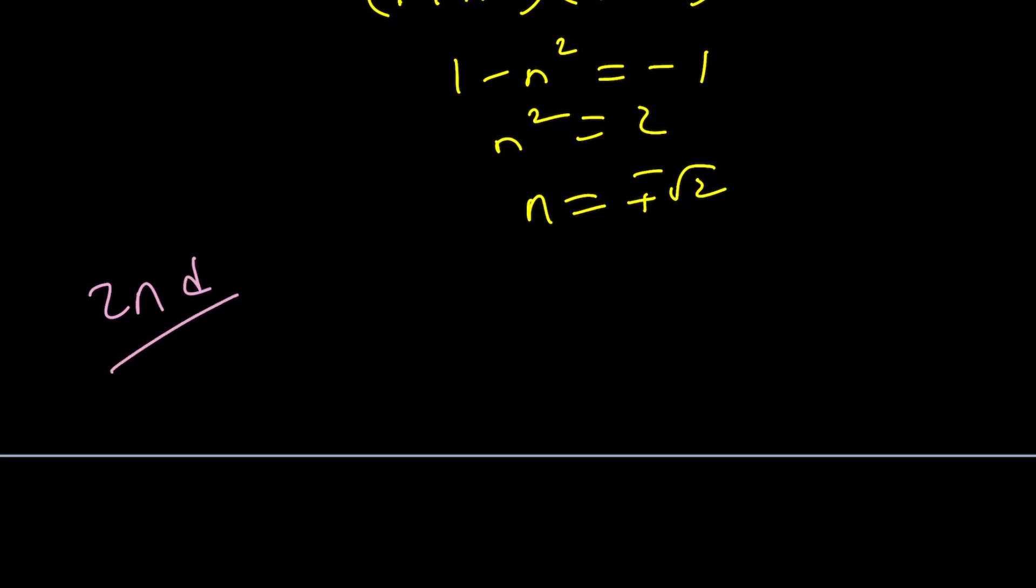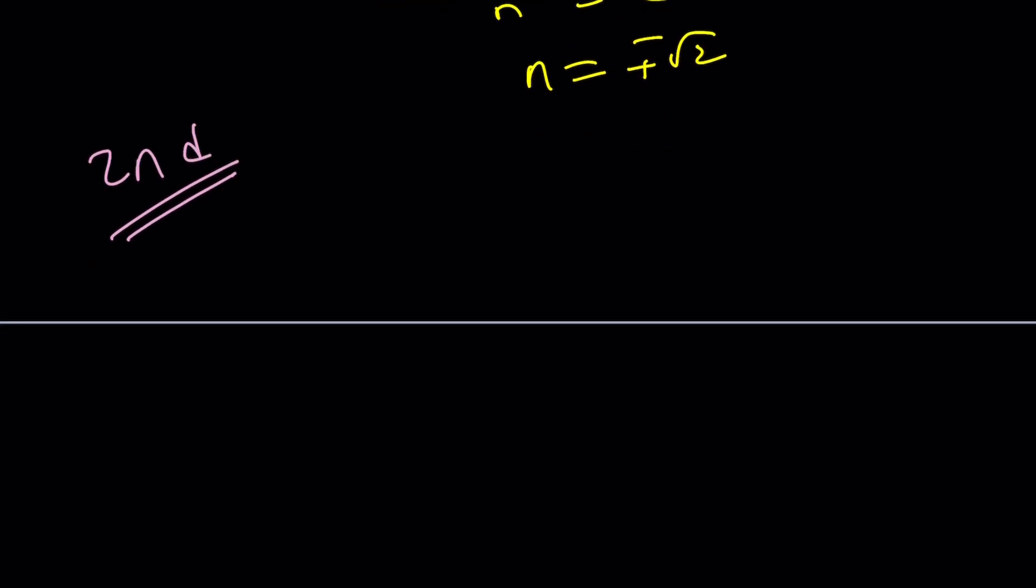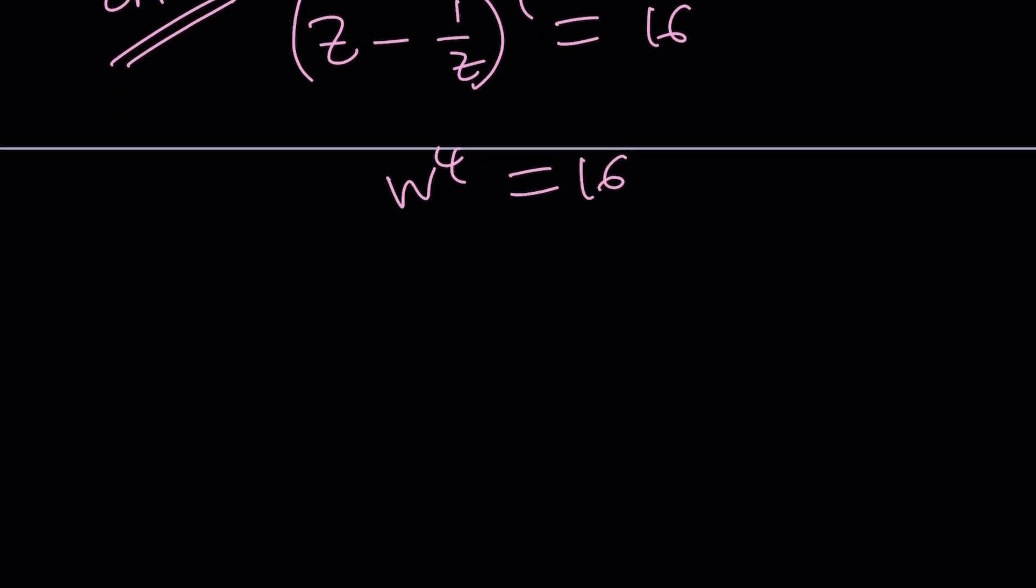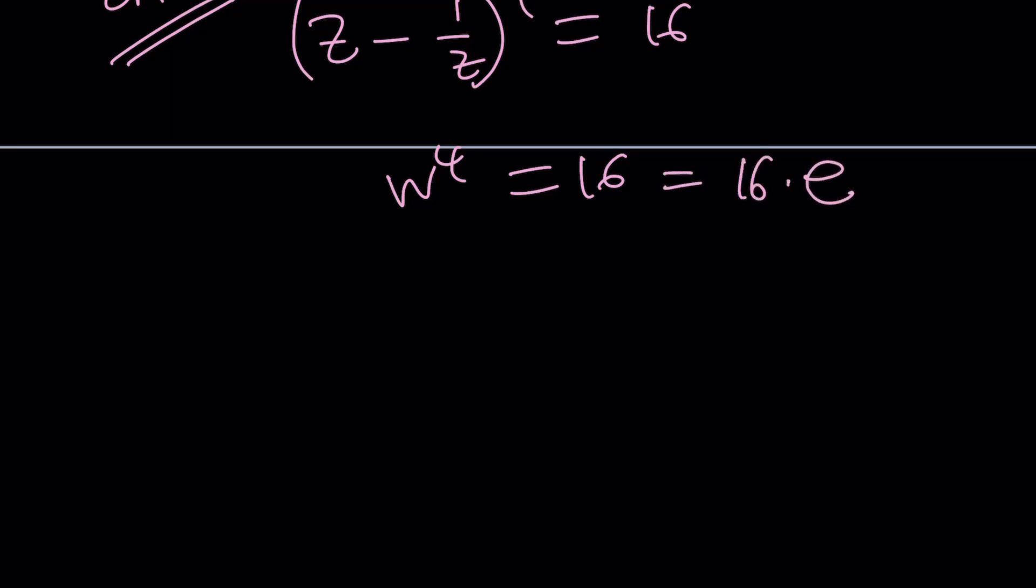You can just use the quadratic formula directly because I can't wait to show you the second method. Does the second method, is the second method much better? You'll get to decide. But remember, we call this thing w. So let's pick it up from there. We have w to the fourth power equals 16. Why not use polar form and complex numbers? We can basically write 16 as 16 times e to the power 2 pi n i. Remember, you can complexify any real number and you can do so by multiplying it by e to the power 2 pi n i. This makes sense, hopefully, because this is one in the complex world. So this is 16.